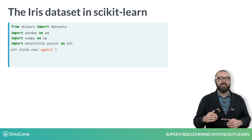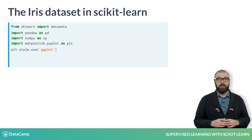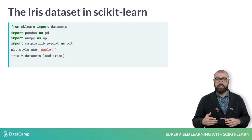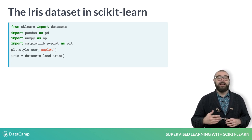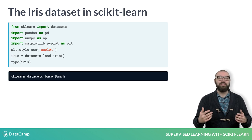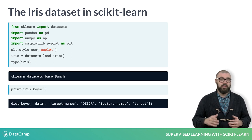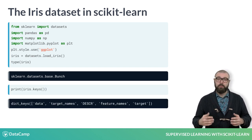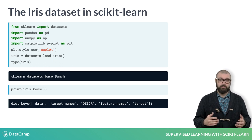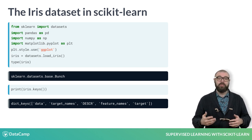Firstly, because it looks great, and secondly, in order to help all you R-aficionados feel at home. We then load the dataset with datasets.load_iris and assign the data to a variable iris. Checking out the type of iris, we see that it's a Bunch, which is similar to a dictionary in that it contains key-value pairs. Printing the keys, we see that they are the feature names, desc — which provides a description of the dataset — the target names, the data which contains the feature values, and the target which is the target data.